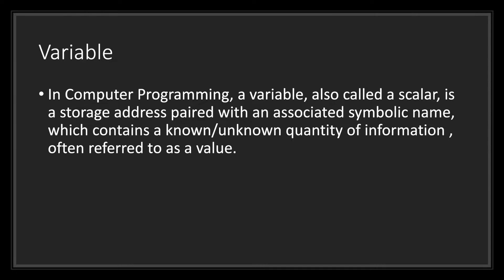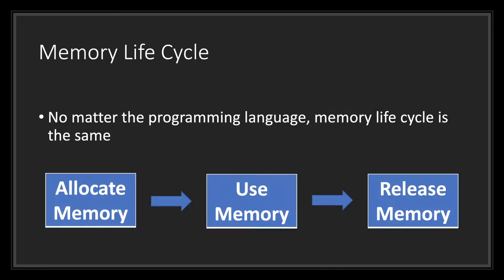To better understand what a variable is, we need to first learn about memory lifecycles. A memory lifecycle is the time between an object's creation and its destruction. No matter the programming language, memory lifecycles are the same: you first allocate memory, then you use memory, and lastly you release that memory so you can allocate new memory.